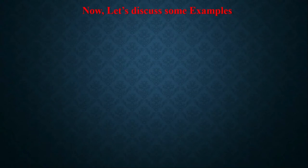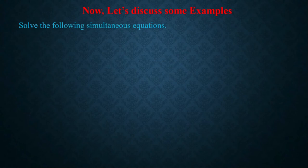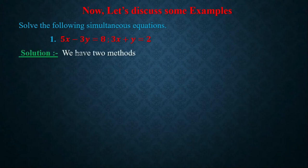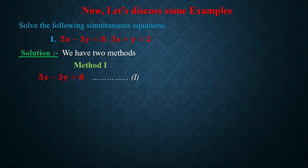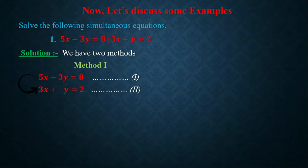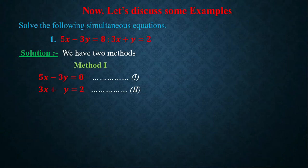Now let's discuss some examples. We will learn how to solve simultaneous equations. The first question is: 5x − 3y = 8 and 3x + y = 2. To solve this we have two methods. For Method 1 (elimination), we label 5x − 3y = 8 as equation 1 and 3x + y = 2 as equation 2. In equation 1, the coefficient of y is 3; in equation 2, the coefficient of y is 1.